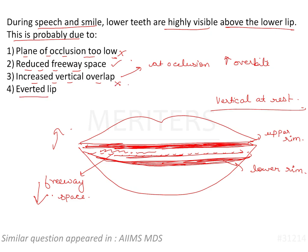The last option is averted lip. Averted lip is also a reason that the lower teeth could appear highly visible, but in that case you have to adjust the freeway space and the plane accordingly — so averted lip is a more subjective option. Out of reduced freeway space and averted lip, the most favorable answer should be reduced freeway space, because if you reduce the freeway space, then the vertical will increase and the lower and upper teeth will be more visible.